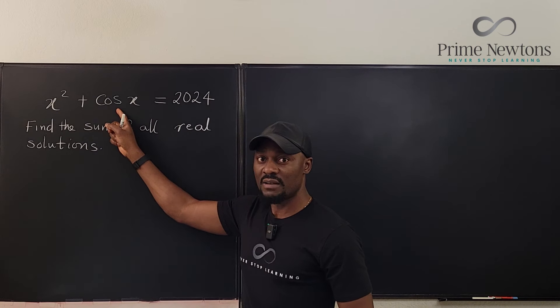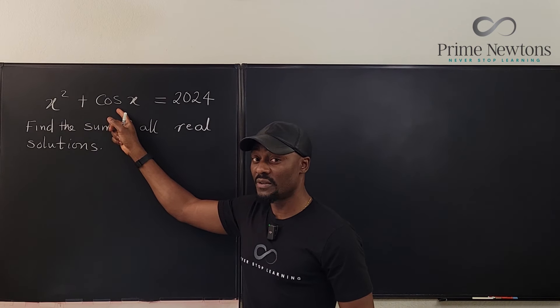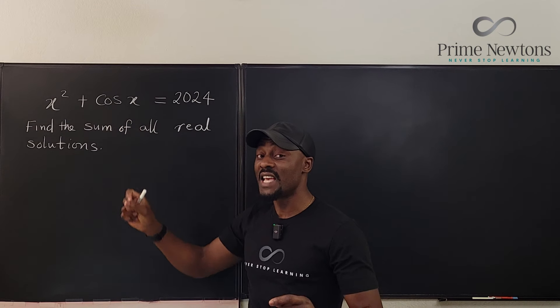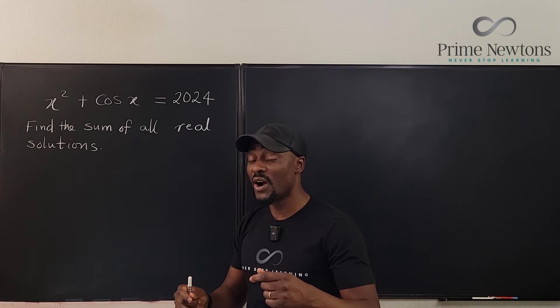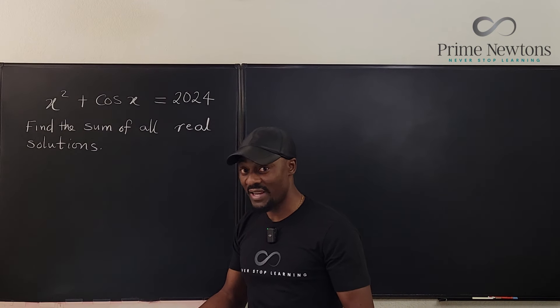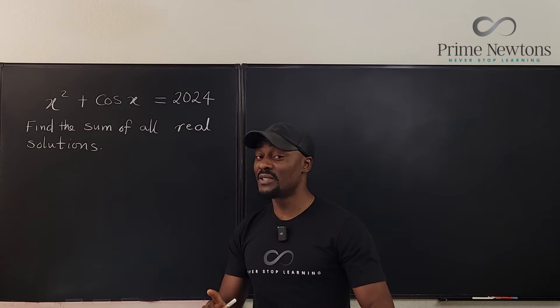The same thing here. Cosine is an even function. So the cosine of x is the same as the cosine of minus x. So what does this mean?